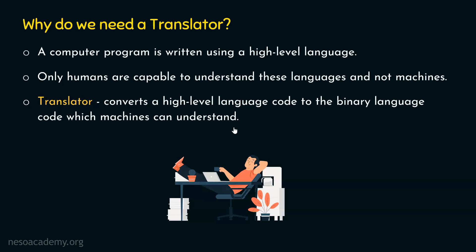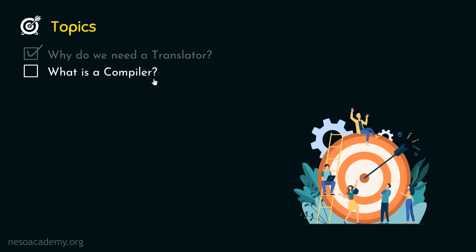Now you know why we need a translator. There are two types of translators: one is called a compiler, and the other one is called an interpreter. In this presentation, we will try to understand what is a compiler. In the next presentation, we will understand what is an interpreter, and we will try to understand the differences between the two.